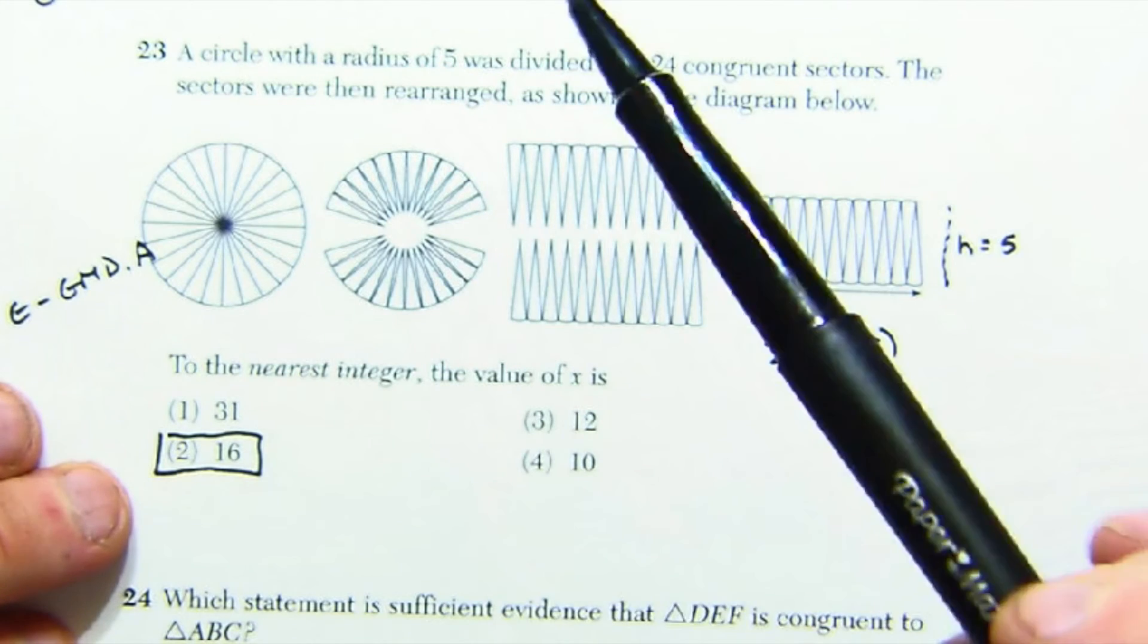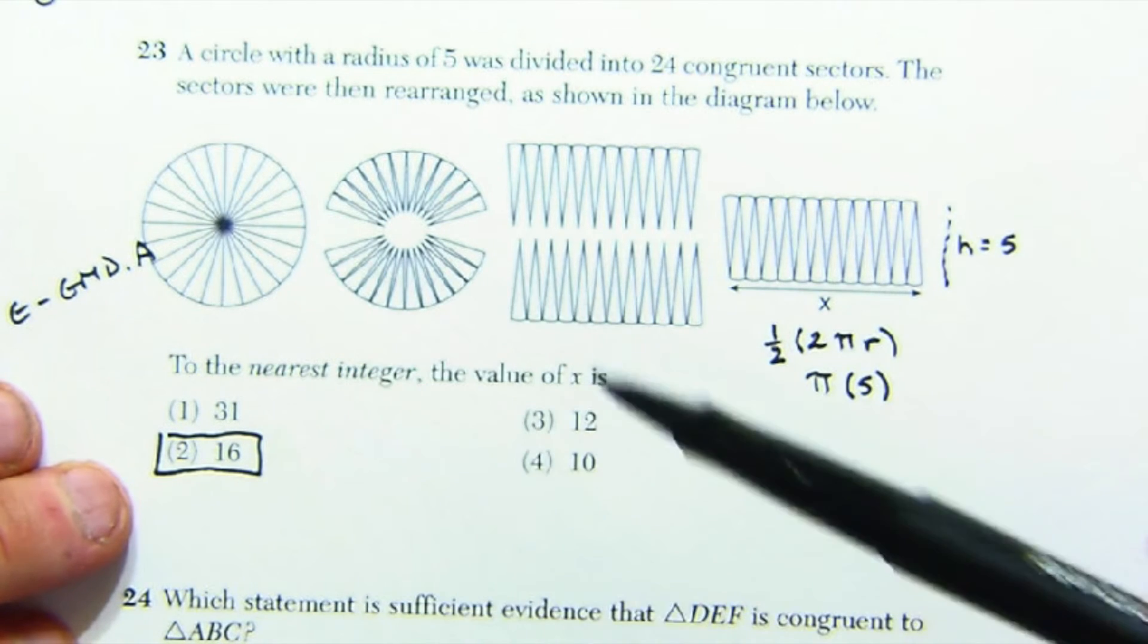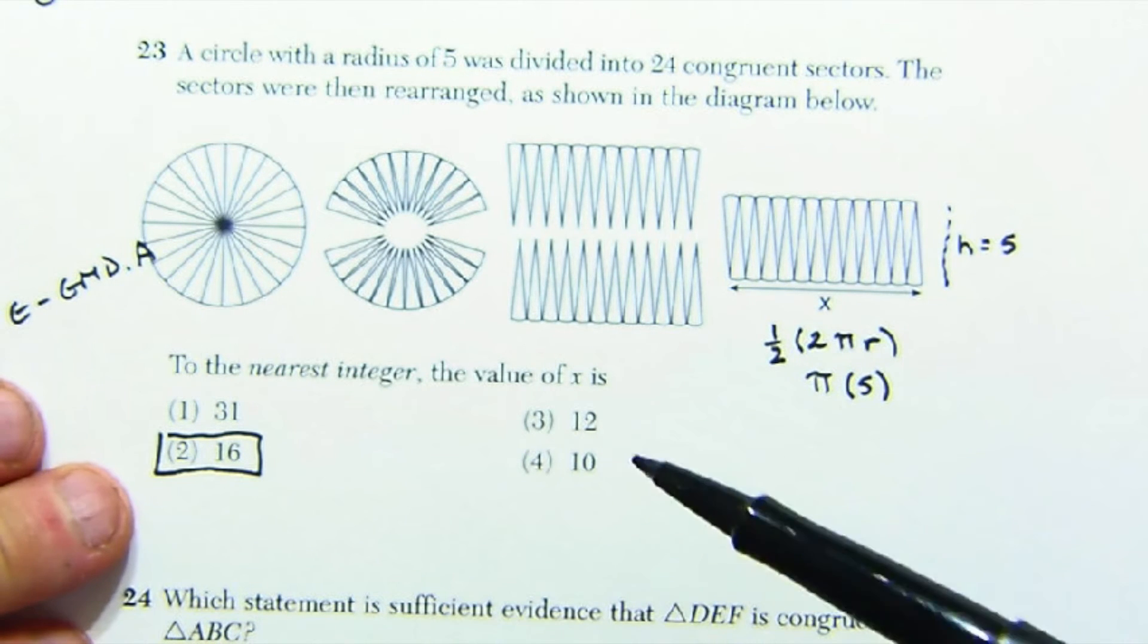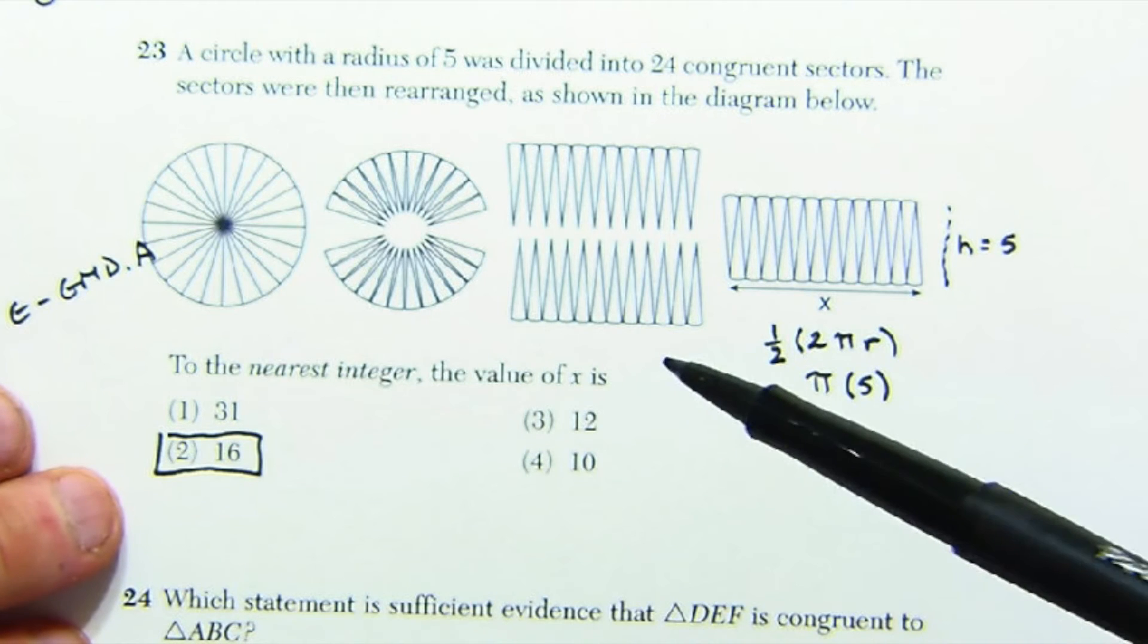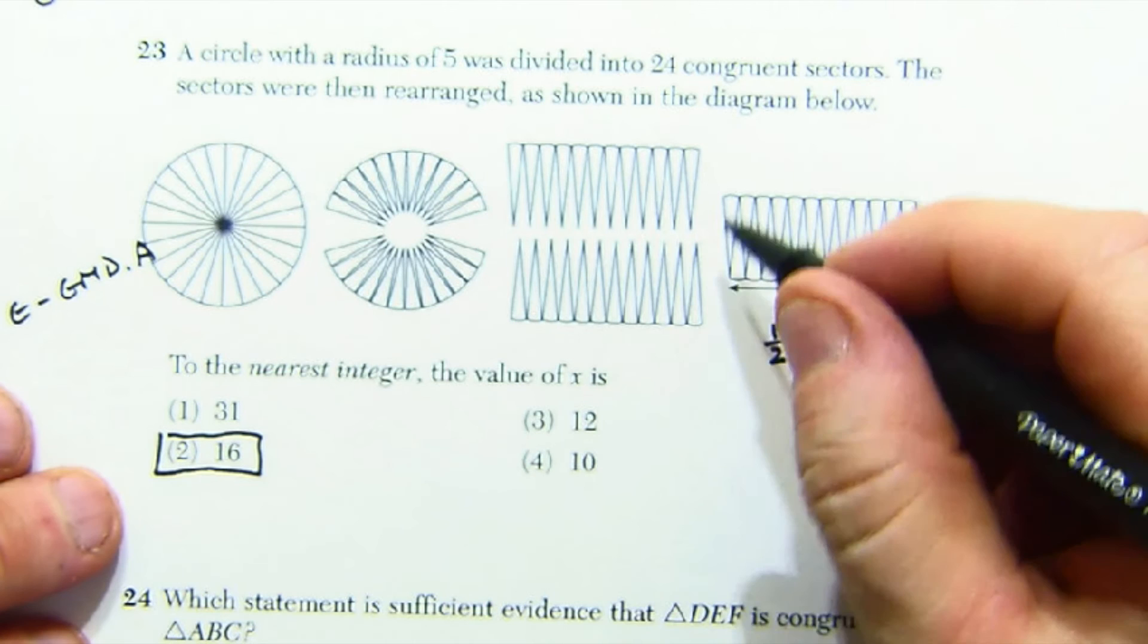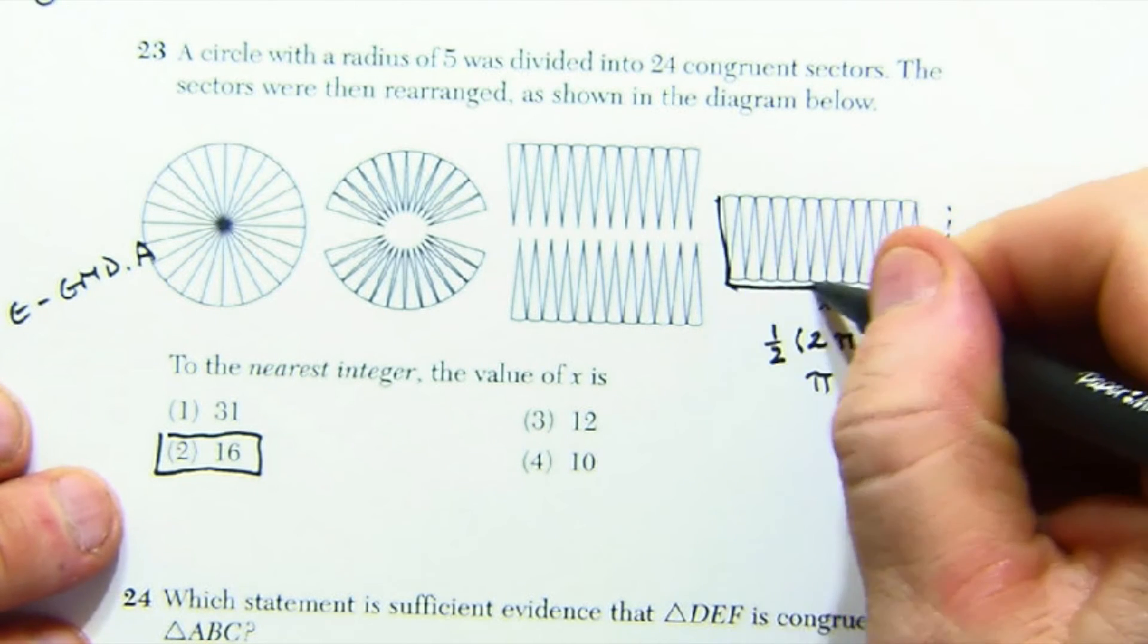Question 23 gives you a radius and some information about cutting a circle into small pieces. Because this is specifically stated in the standard, an obvious direct question to that standard. It's definitely in the right cluster. And the idea is that if you put them piece by piece like this, you form a parallelogram.